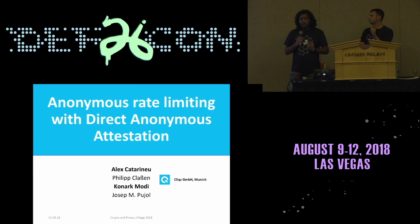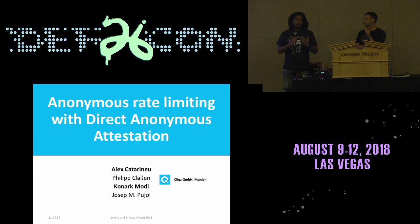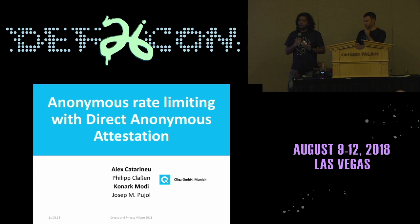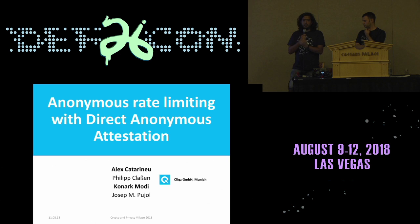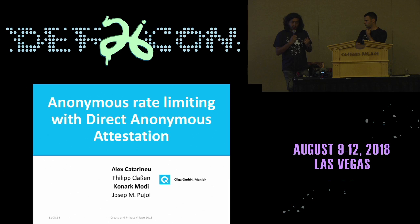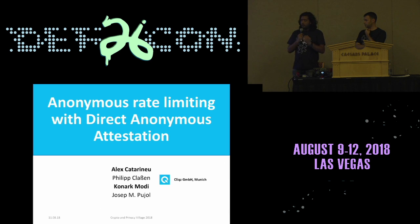Today we are going to talk about a system that we developed and use at Cliqz, which basically helps us prevent attacks on our data collection system. Although the examples that we will take here will be based on the events that we receive in our data streams, we believe the system is generic enough that wherever rate limiting applies the system can be used. Before Alex will talk about the system in detail, I would just like to explain why in the first place we needed to build an anonymous rate limiting system and how it has evolved since 2016.